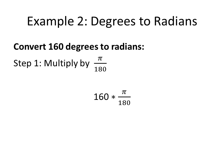Now going the other way. Let's say we wanted to convert 160 degrees to radians. We first multiply our value in degrees by pi over 180. So you have 160 times pi divided by 180.